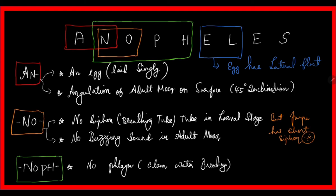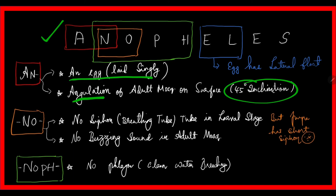Using the acronym for Anopheles: AN — it lays eggs singly, one by one; and it is angulated at 45 degrees inclination when resting — that refers to the adult. NO — no siphon tube in the larval stage, but there is a short triangular siphon tube in the pupa. No buzzing sound — very important, because Culex produces a buzzing sound, whereas Anopheles does not. NOPH — no phlegm, meaning it breeds in clean, fresh water. EL — egg has lateral float.